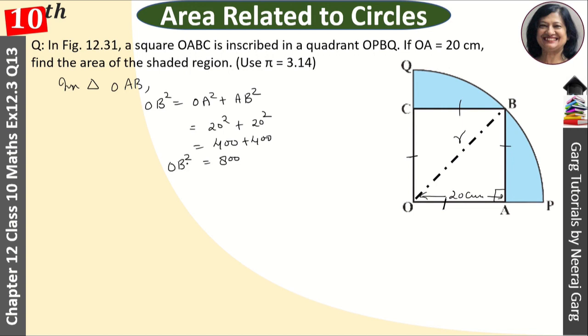This is OB square, which was R square. So how much is R? R is equal to root 800. So R is equal to 20 root 2 centimeter.